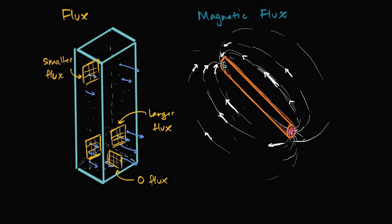Now let's say this theoretical net can be stretched or contracted. If we stretch that net upward, so it becomes a bigger net, this thing is going to have larger flux because there's just more area — there's more to flow through. For this larger surface, you're going to have larger flux because more air is going to go through it in a given unit of time.